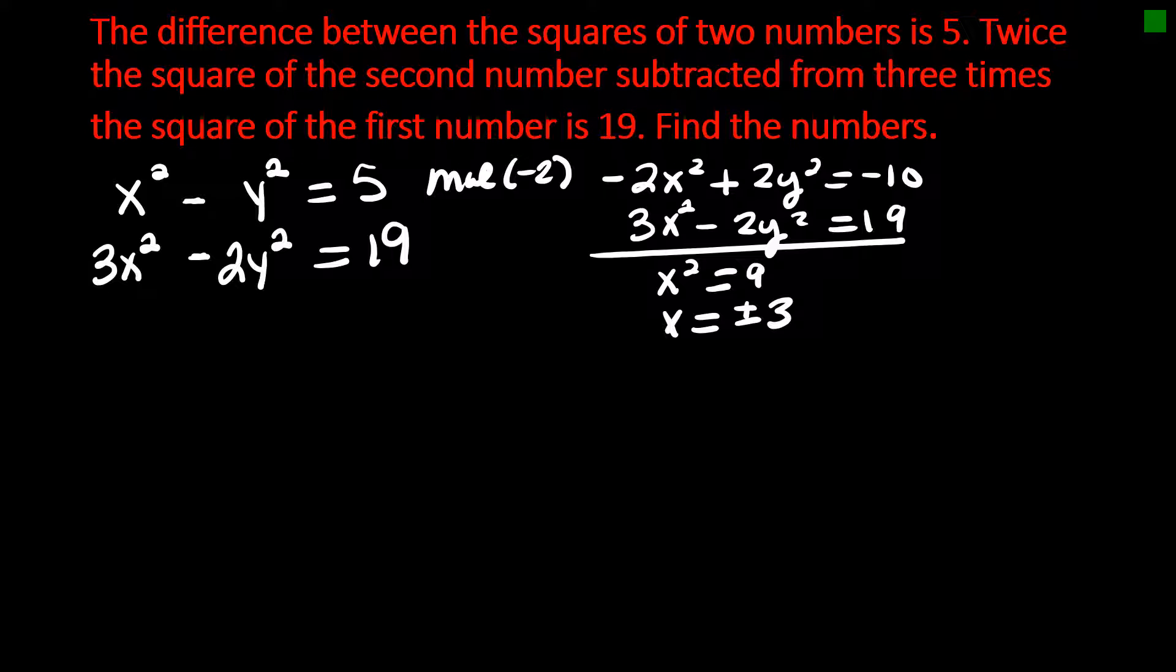So now I need to find y. And I'm going to go here and I'm going to solve for y. Y squared is going to be x squared minus 5. So y is going to be plus or minus the square root of x squared minus 5. So let's look. When x is 3, y is going to be plus or minus, 3 squared is 9, 9 minus 5 is 4, the square root of 4 is 2.